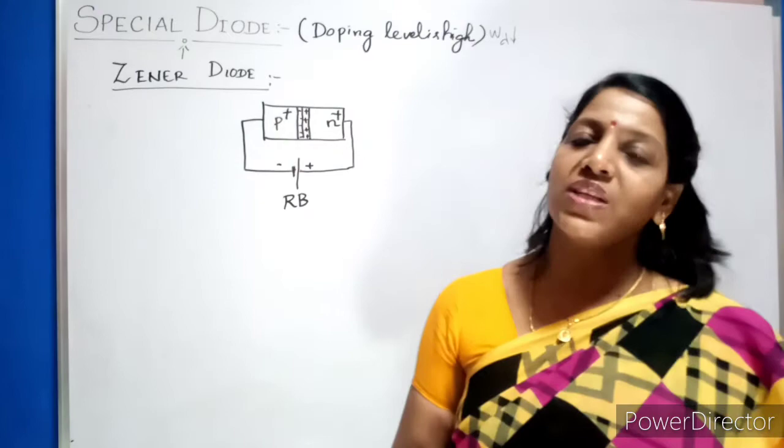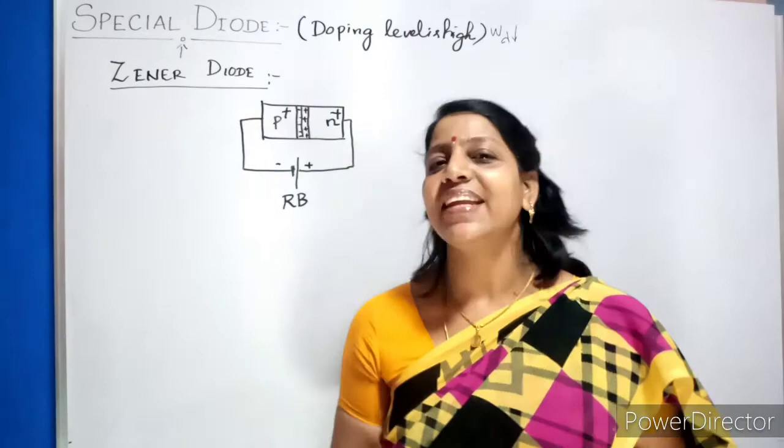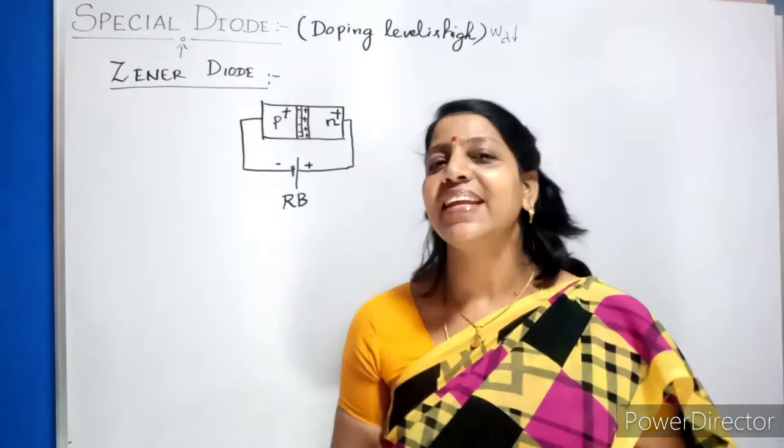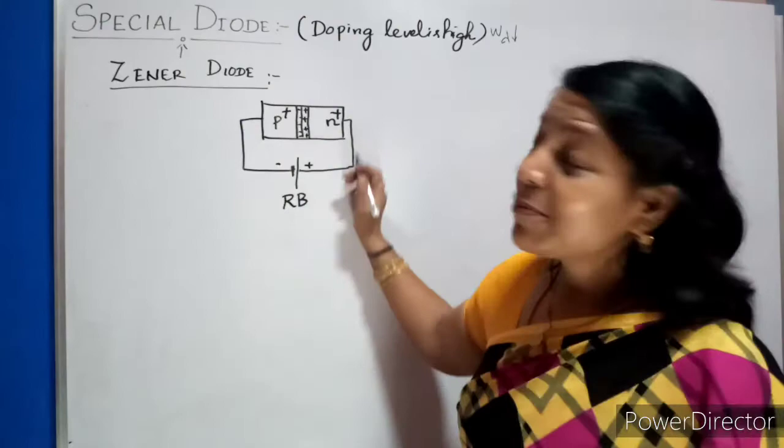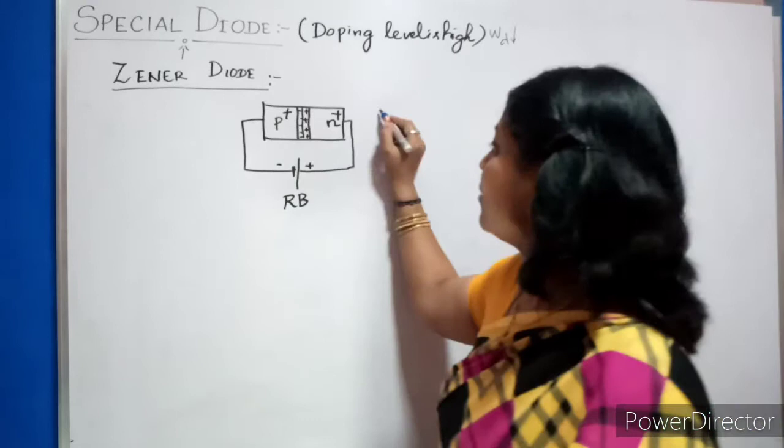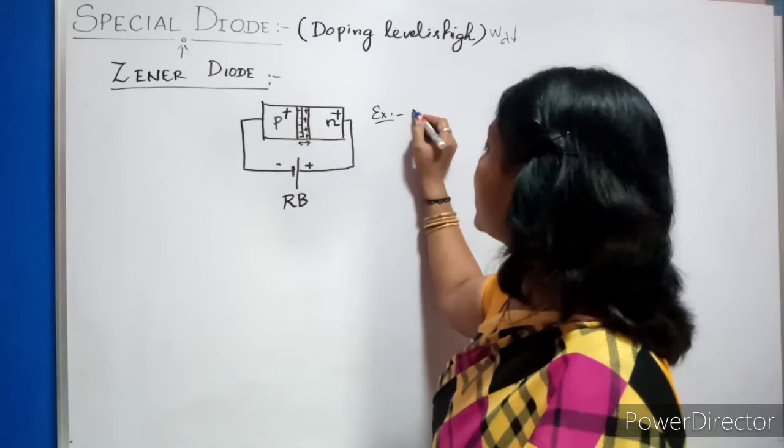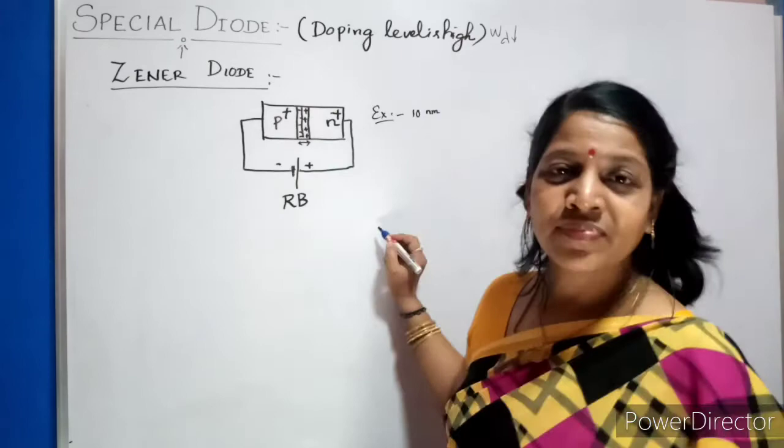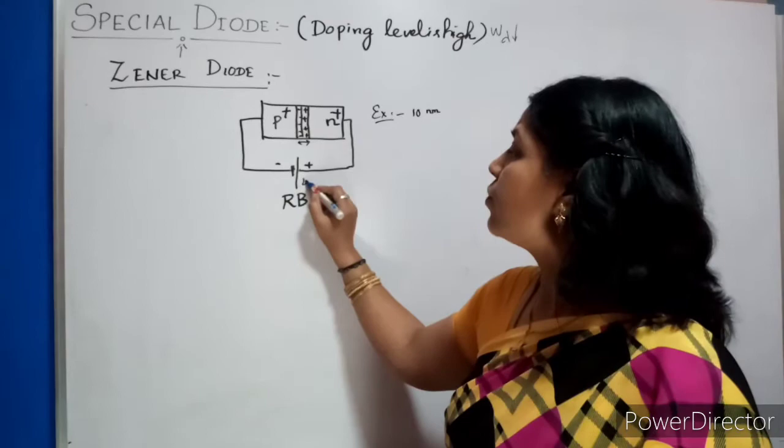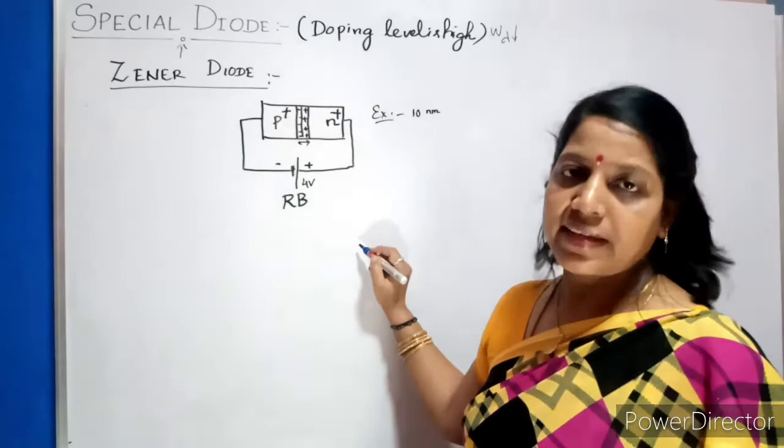Now you are giving reverse bias to this diode. I already mentioned it is heavily doped, so its junction potential or barrier is very low. Easily the charge carriers can tunnel or jump from one side to the other side. So what happens? Heavy current will flow. Just imagine, I'll give one small example. Imagine this junction width is very small, in the range of some 10 nanometers. And we are applying a voltage, let it be 4 volts.